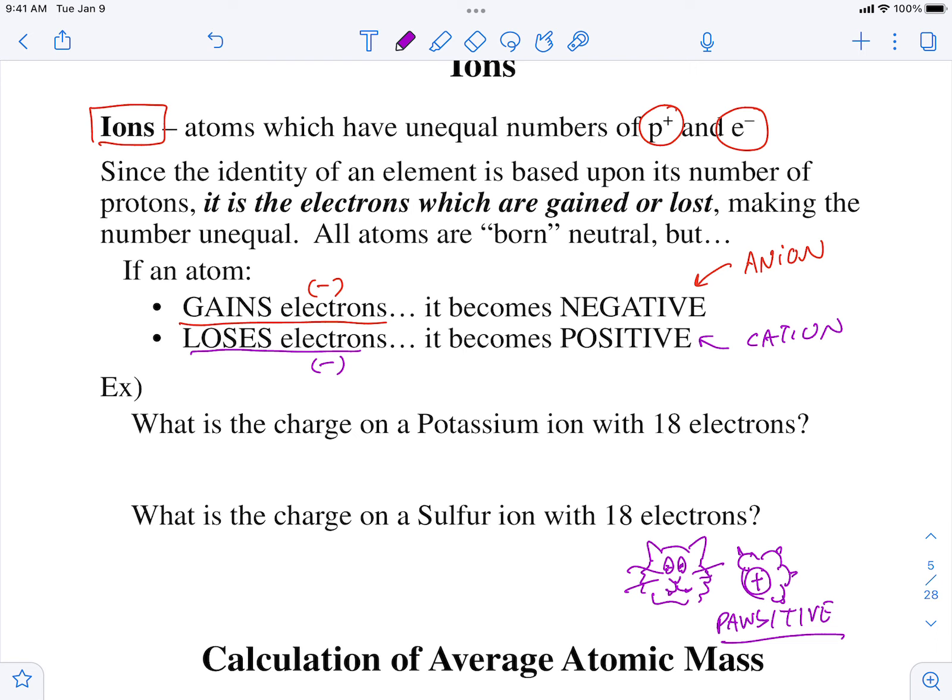So a positive ion is a cation. That's actually how you spell positive.